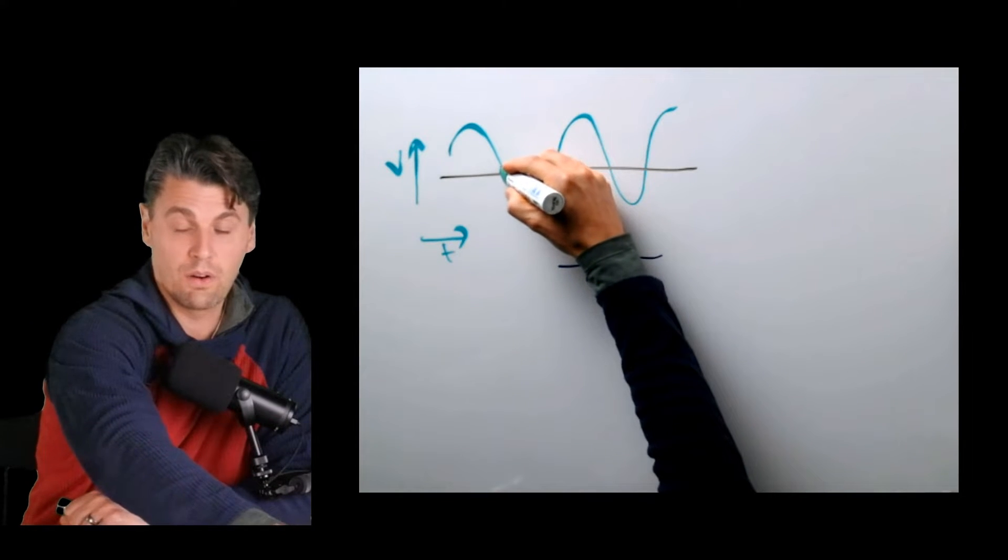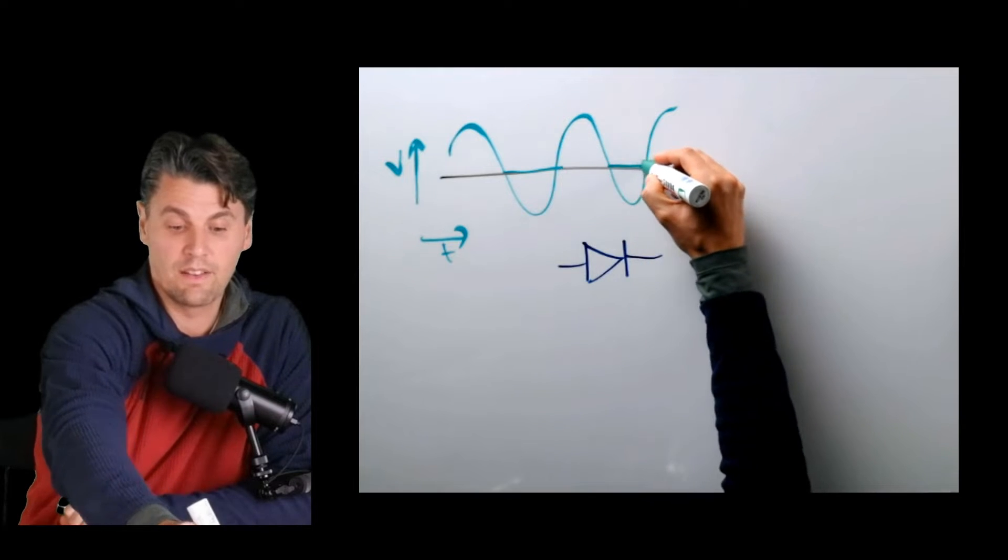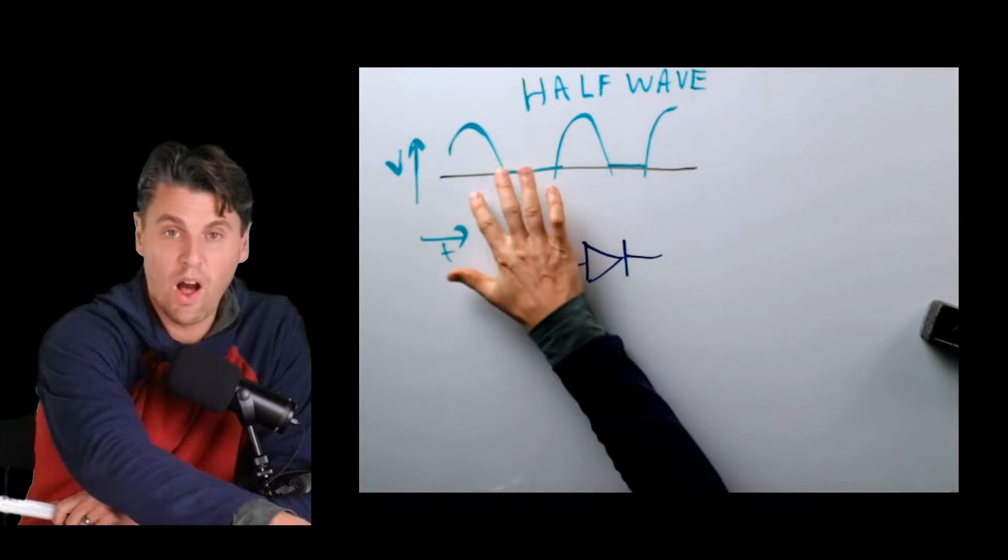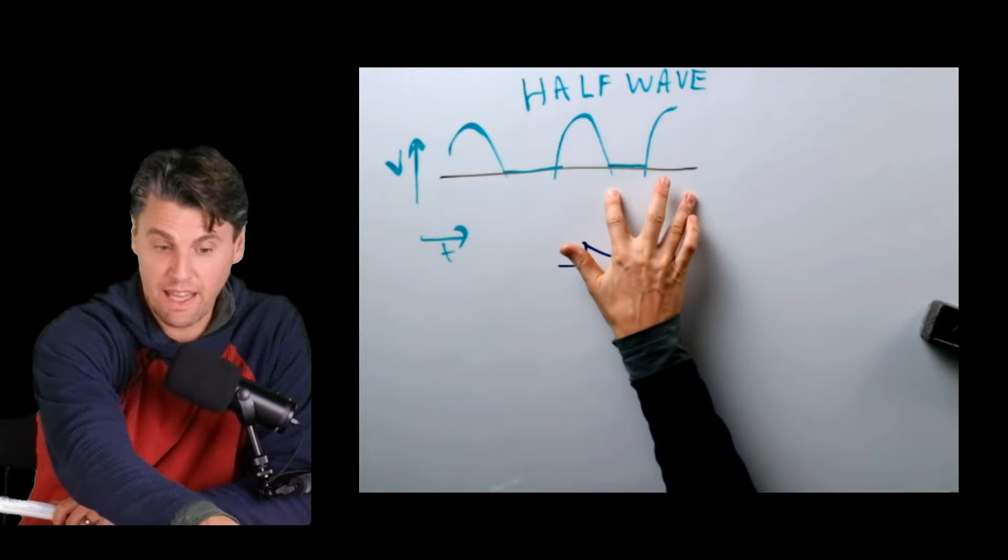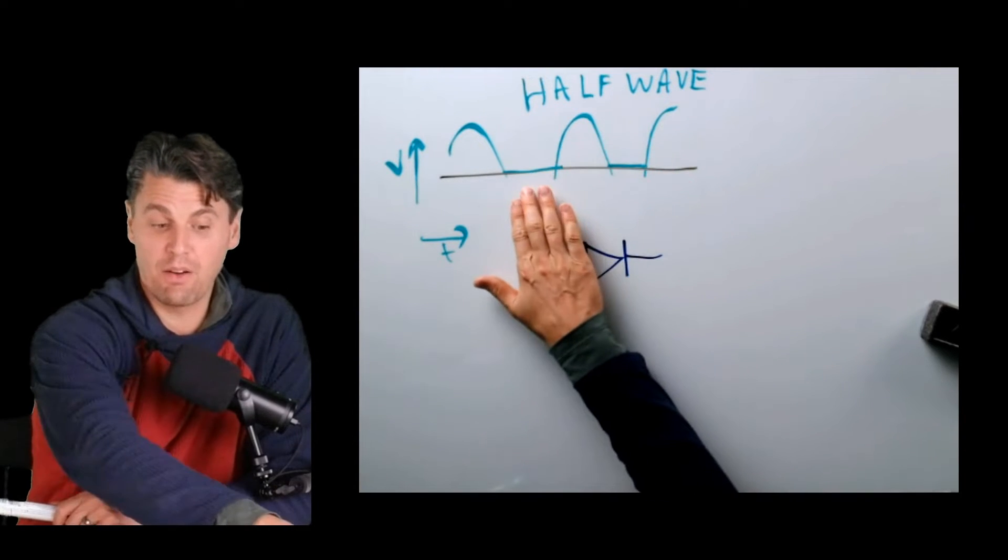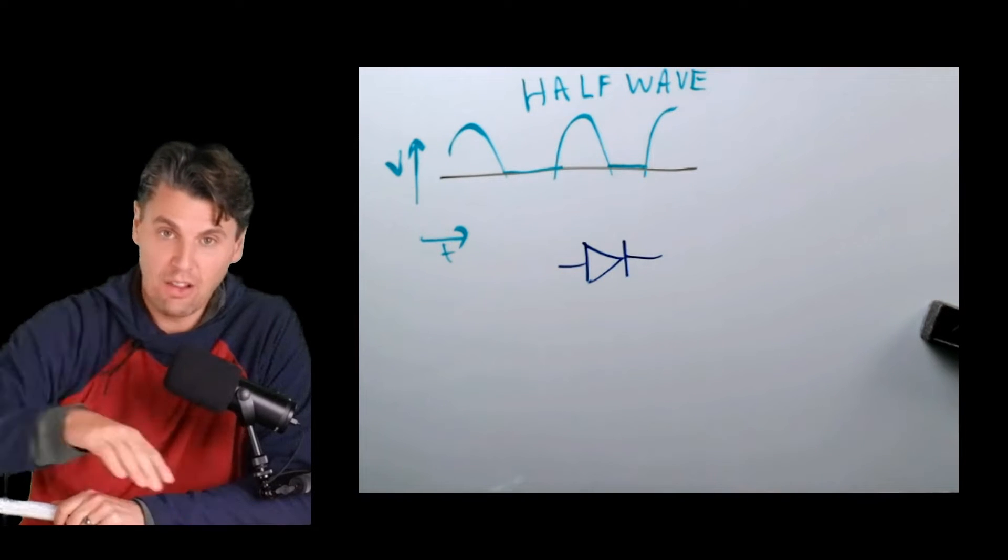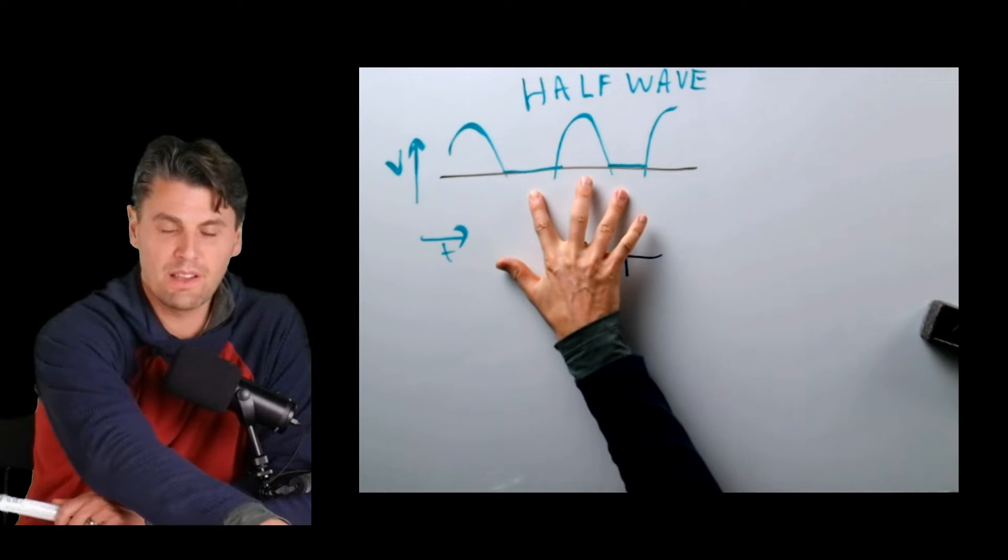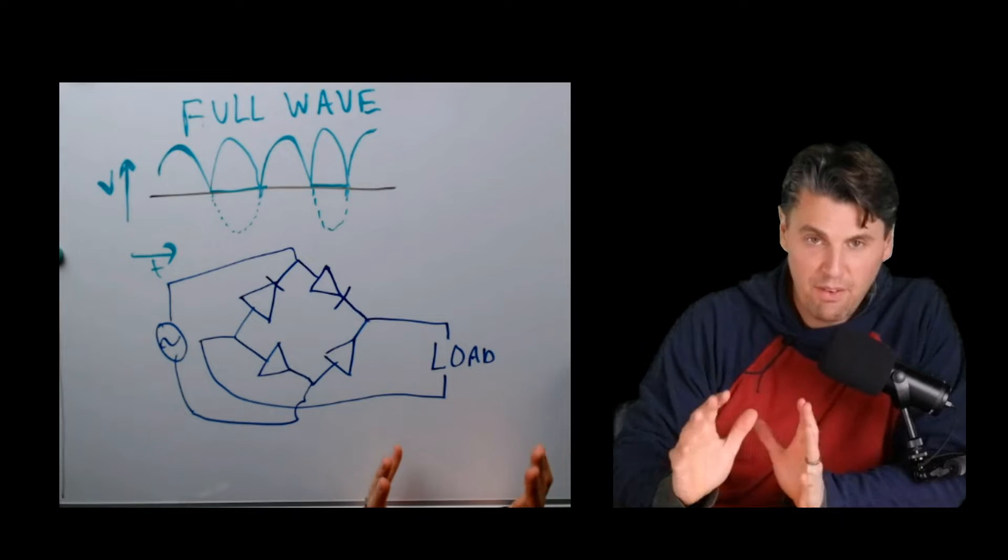This is actually the simplest way and it's what we call half wave rectification. Half wave means we're only actually getting half of the wave coming out. The other half is just getting clipped or chopped off. So that's really not very efficient. Half wave wasn't going to be good enough.